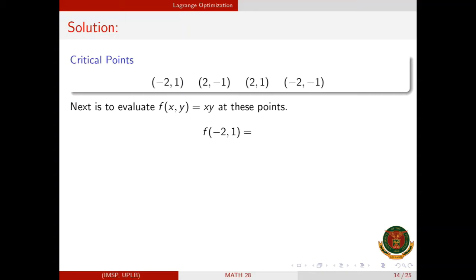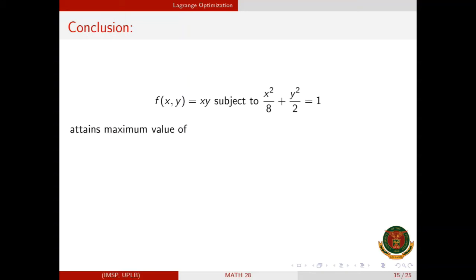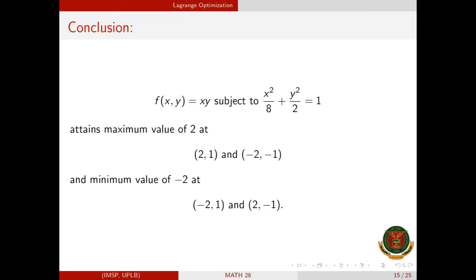Next, we evaluate f(x,y) at these critical points. f(−2, 1) = −2, f(2, −1) = −2, f(2, 1) = 2, and f(−2, −1) = 2. In conclusion, f(x,y) subject to x²/8 + y²/2 = 1 attains a maximum value of 2 at (2, 1) and (−2, −1), and a minimum value of −2 at (−2, 1) and (2, −1).